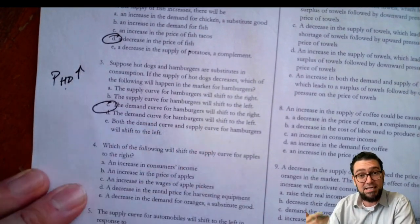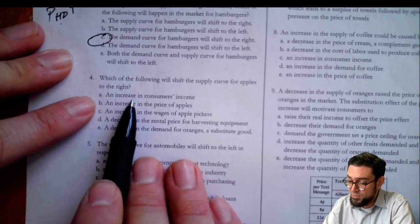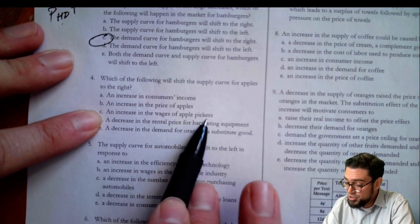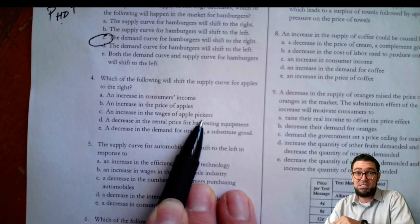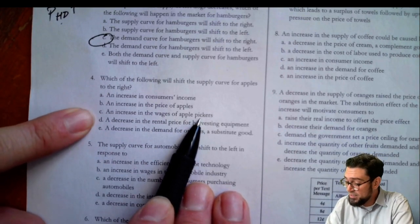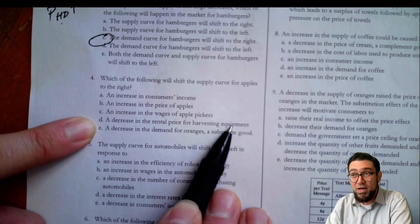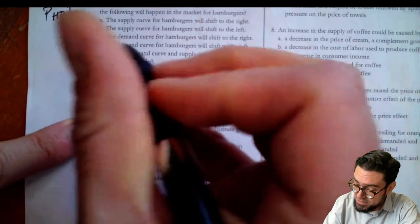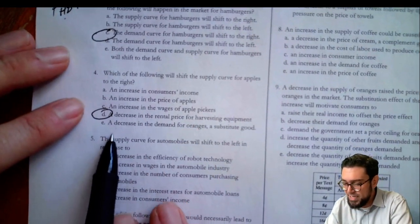Number four: what will shift the supply of apples to the right? Income? No, that's a demand shifter. Price doesn't shift the curve. An increase in wages? That's going to make it more expensive to produce, so it would actually decrease the supply — C is not right. A decrease in the rent rate for harvesting equipment means it's cheaper to rent the equipment, so inputs are getting cheaper, which increases the supply. Answer D. Remember, rightward shift equals an increase in supply.